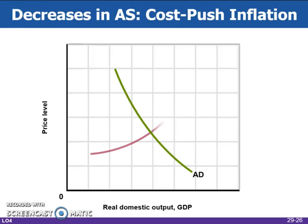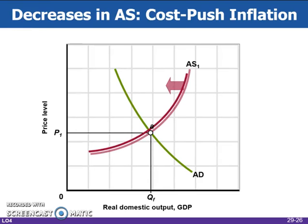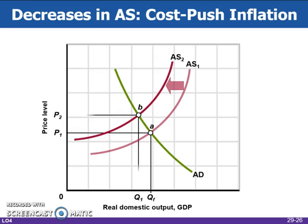This figure reflects a decrease in aggregate supply that causes cost-push inflation. A leftward shift of aggregate supply from AS1 to AS2 raises the price level from P1 to P2 and produces cost-push inflation. Real output declines and a recessionary GDP gap of Q1 minus QF occurs.